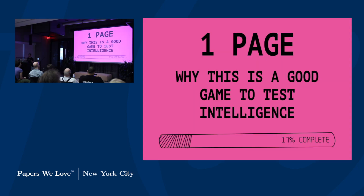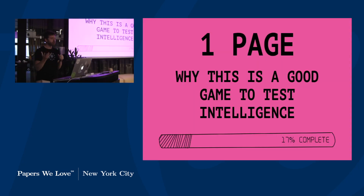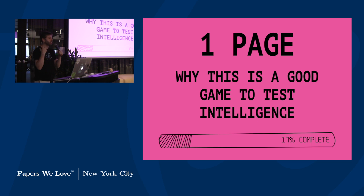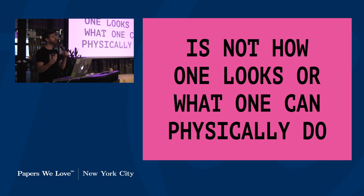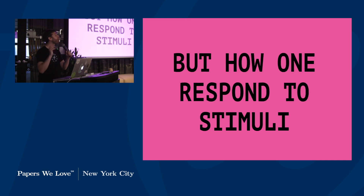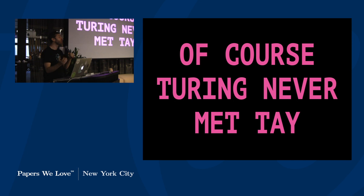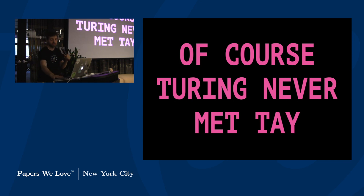After talking about the imitation game, Turing sets out why he feels it is a good way to test intelligence. That's because, to Turing, intelligence is not how somebody looks or what they physically can do, but how they respond to stimuli.